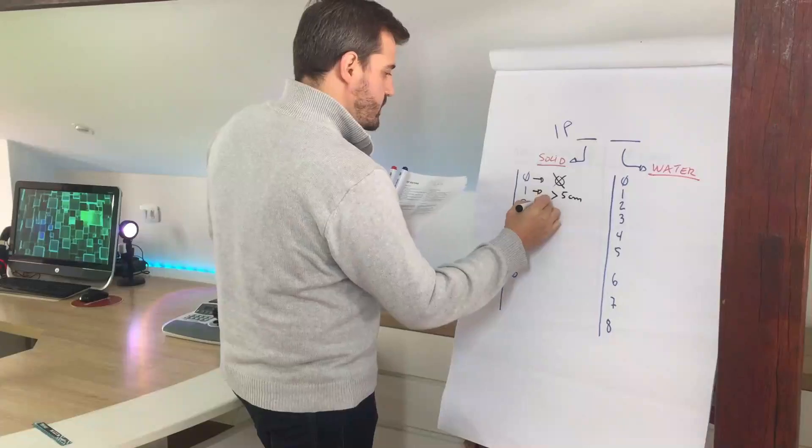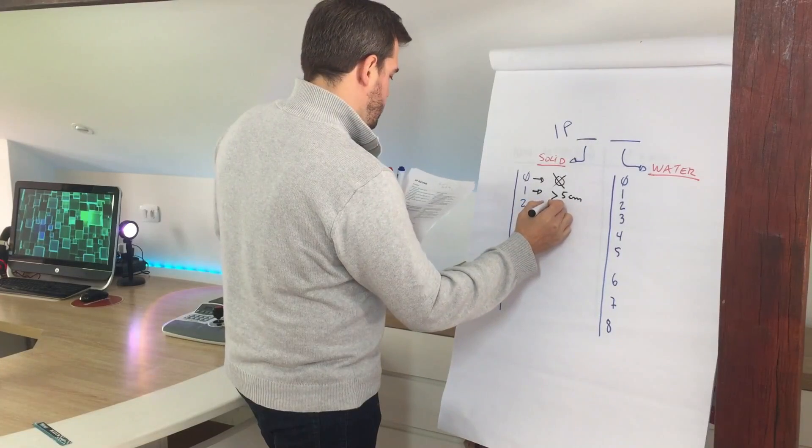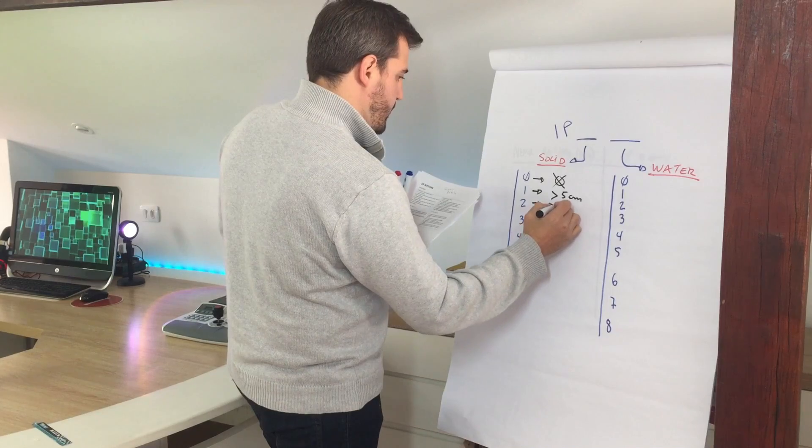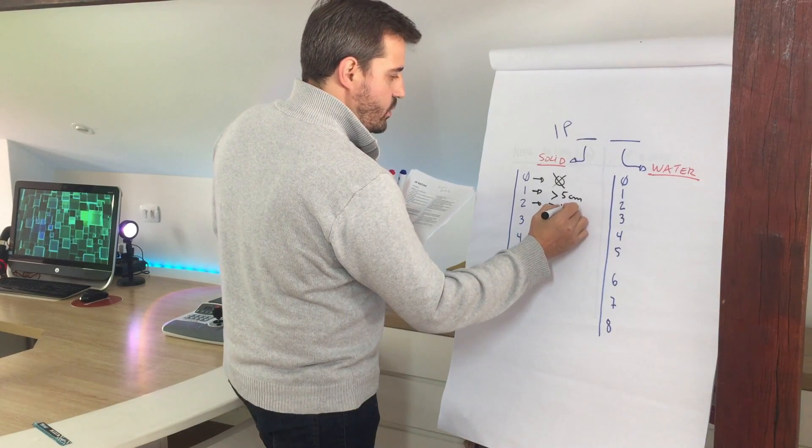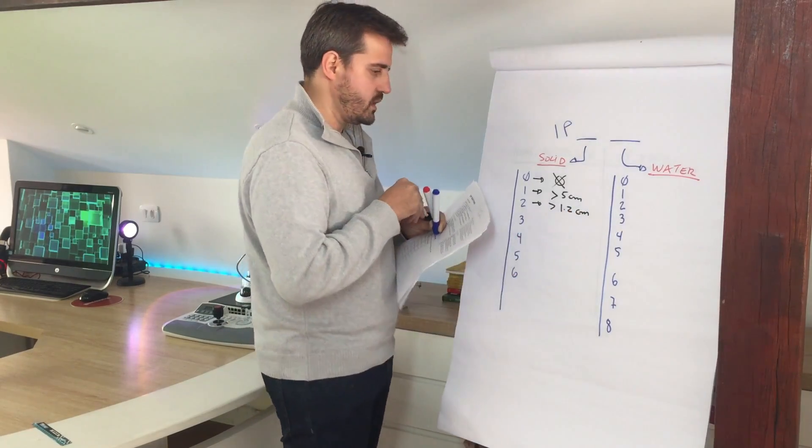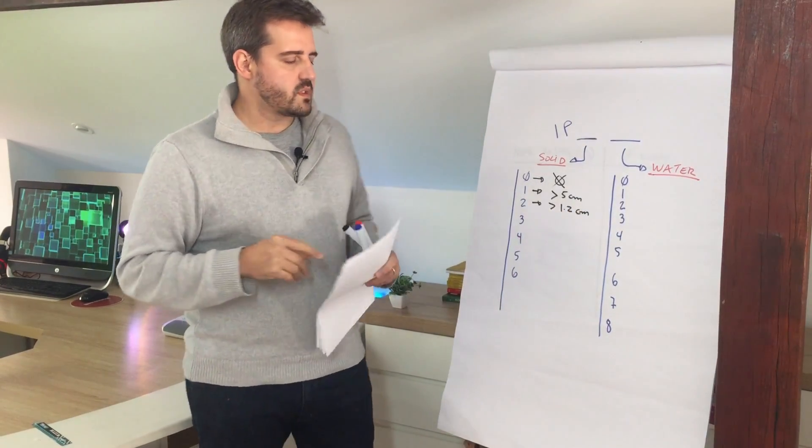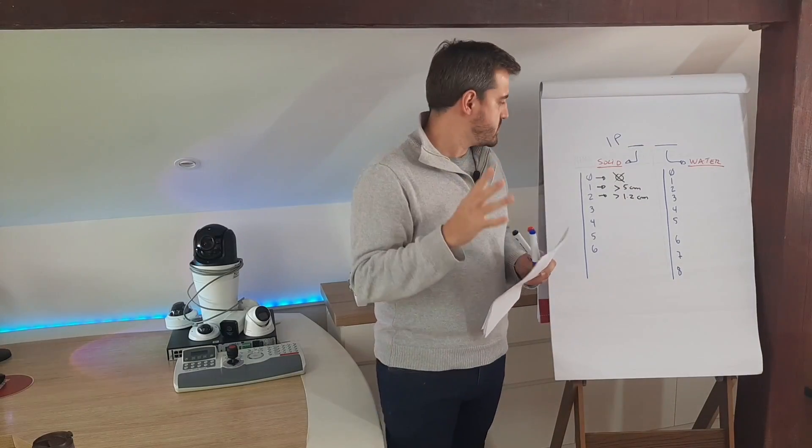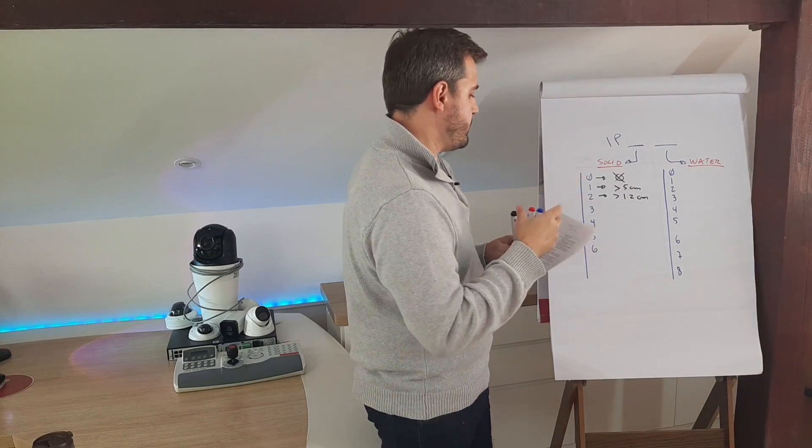Second one here, it will protect solids greater than 1.2 centimeters. So this will give us a little bit like a finger, something like that, but still very big objects.